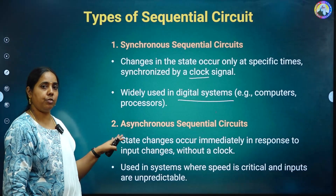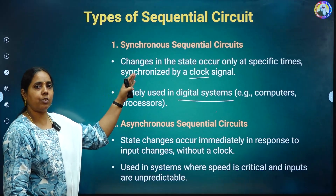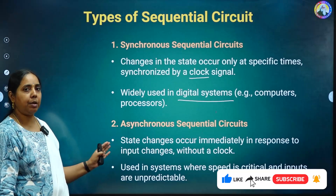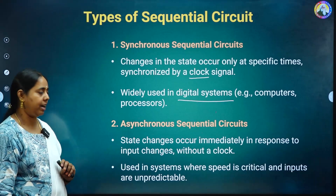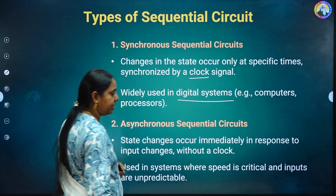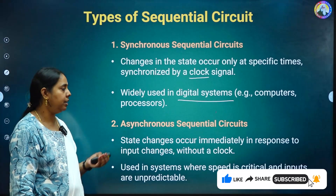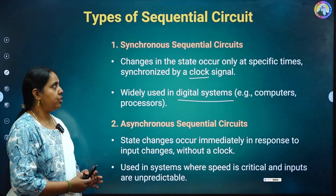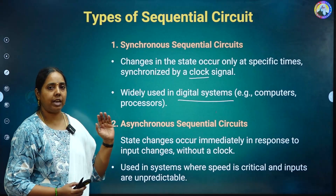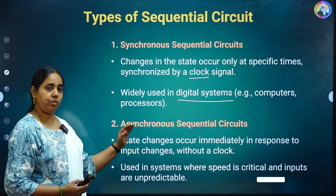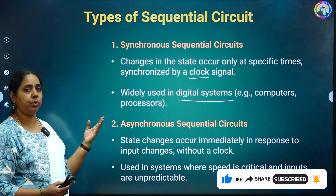In the asynchronous sequential circuit, even without applying a clock, the output will change by changing the input. Asynchronous sequential circuits are used in systems where speed is critical and inputs are unpredictable. So the key difference: in synchronous circuits the output changes based on the clock signal, whereas in asynchronous circuits the output changes based on the input, without depending upon the clock.